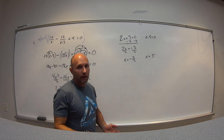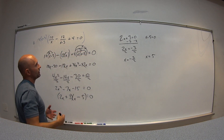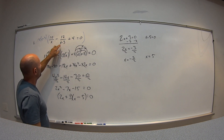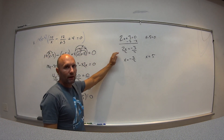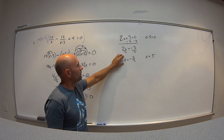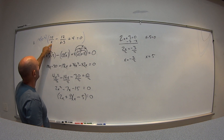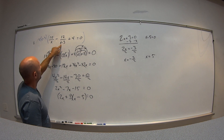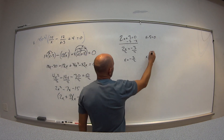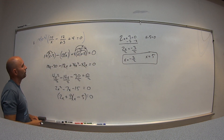This might be our answer, but just as with radical equations we had to check, with a rational equation we have a variable in the denominator. We need to make sure our answers don't create a problem in the original. x can't be 0 and x can't be 3. Since we don't have 0 or 3 as answers, both solutions are valid.